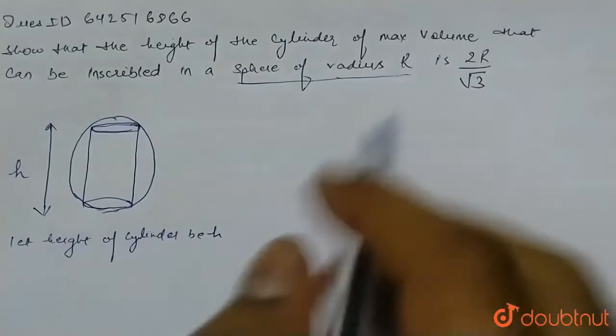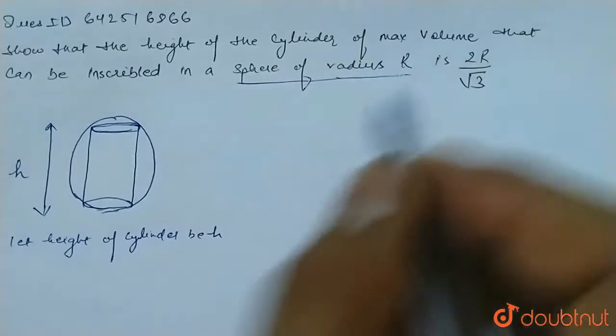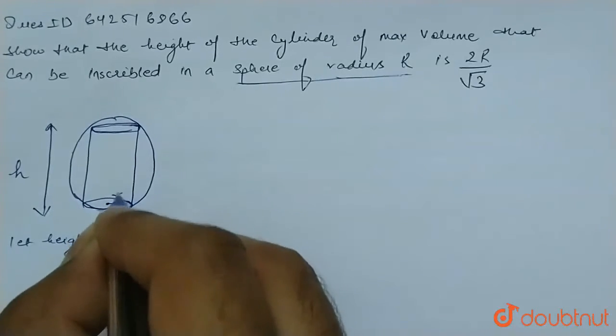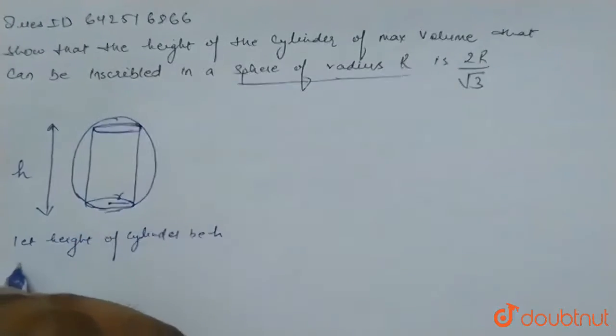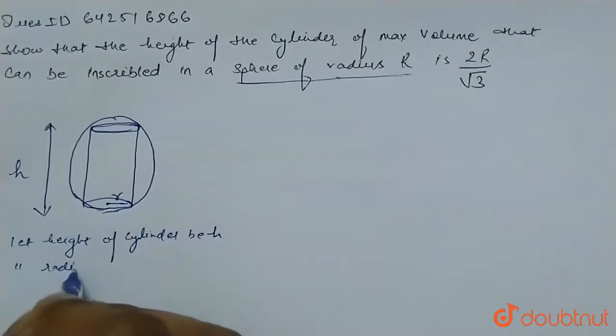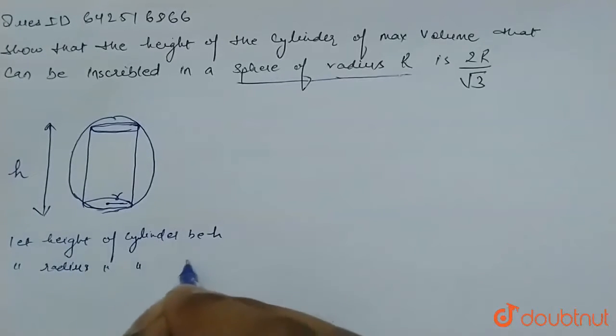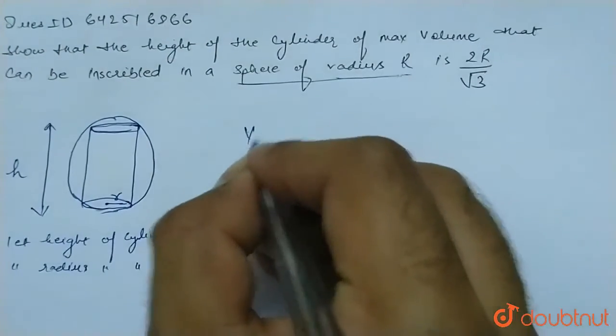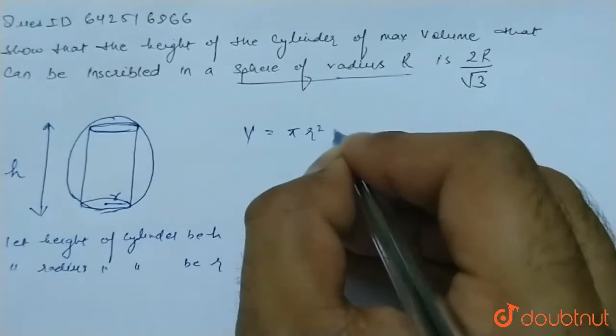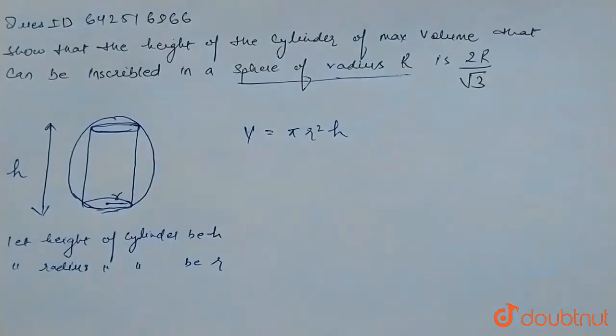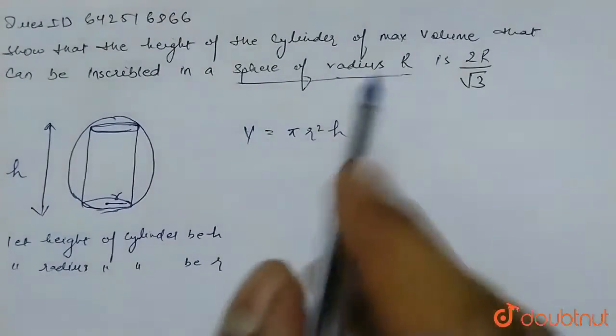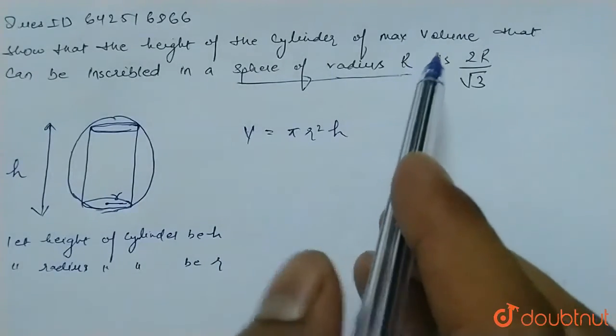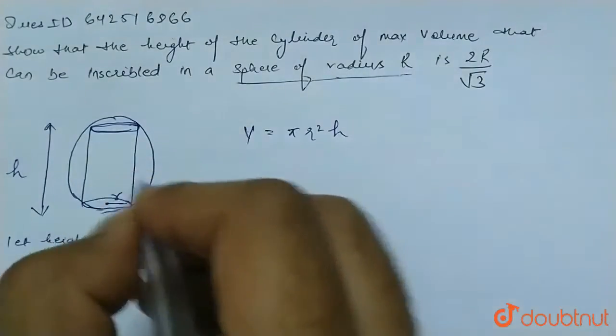Now we have to maximize the volume. So let the radius of the cylinder be small r. What will be the volume of cylinder? The volume of cylinder is π r² h. Now we want a relation in h and the radius of a sphere, and the radius of a sphere is capital R.